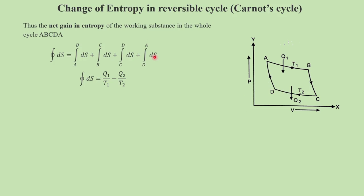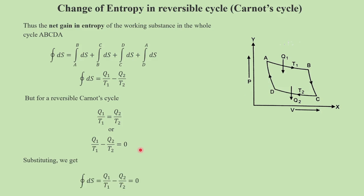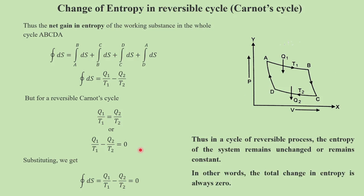For a reversible Carnot cycle, we have seen that Q1 by T1 equals Q2 by T2. Because these two are equal, their subtraction equals zero. Therefore, Q1 by T1 minus Q2 by T2 equals zero, and so the net change in entropy dS equals zero. Thus, we can say that in a reversible process the entropy of the system remains unchanged — the total change in entropy is always zero for a complete reversible cycle.